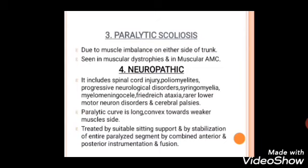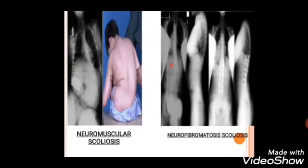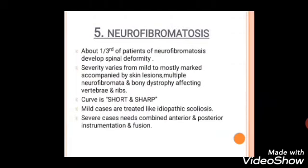The last type is neurofibromatosis scoliosis. About one-third of patients with neurofibromatosis develop spinal deformity, varying from mild to markedly severe, accompanied by skin lesions, multiple neurofibromas, and bony dystrophy affecting vertebrae and ribs. Importantly, the curve in neurofibromatosis is short and sharp. Mild cases are treated like idiopathic scoliosis; severe cases need combined anterior and posterior instrumentation and fusion.